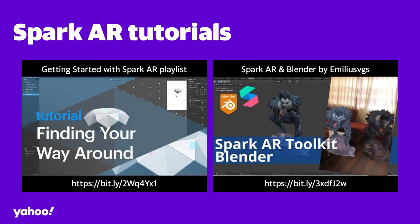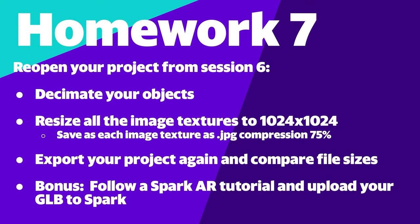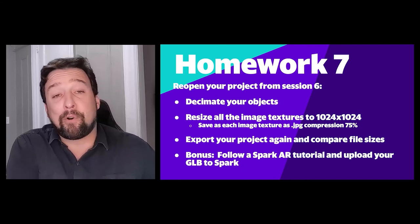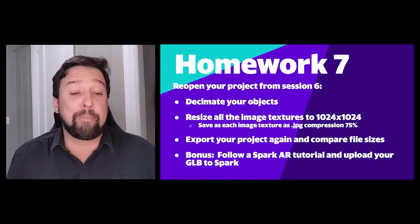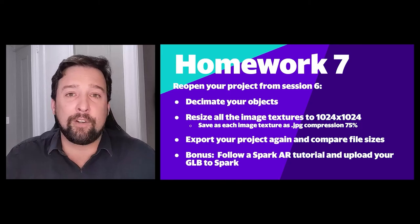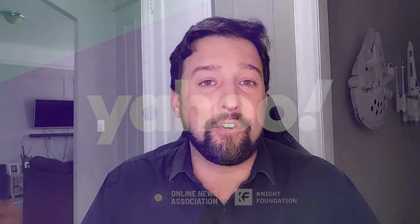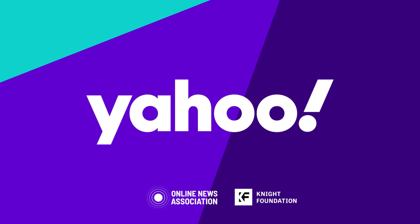With your project more optimized, you can begin bringing it into other platforms. There are two great tutorials on setting up your project for Spark — one by the Spark creator group on YouTube, and another on preparing your Blender project for import into Spark. Your homework for this week: reopen your project from session six, decimate your objects, resize all texture images to 1024×1024 and save each as JPEG with compression 70 unless transparency is involved, then export and compare the two file sizes. As a bonus, bring it into Spark AR and upload your package to share on social media. We'll see you in the next episode to talk about photogrammetry. Auf Wiedersehen!